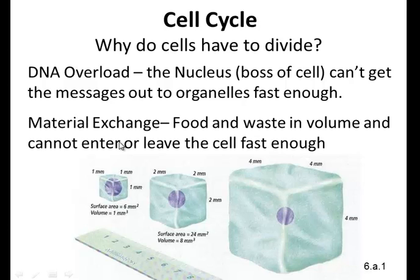The second reason is material exchange. Think of it like doors in the cell. The more doors we have per surface volume, 6 to 1 is much better than 24 to 8. This is a much better cell size. DNA overload means can't get messages out fast enough. Material exchange means can't get materials in and out of the cell fast enough.